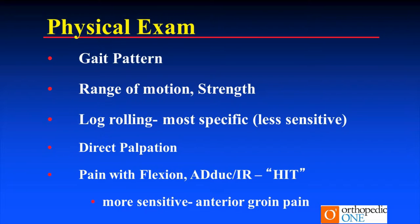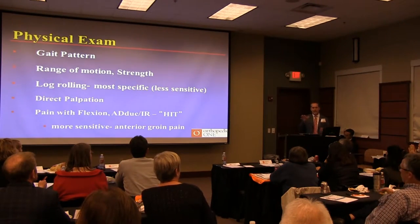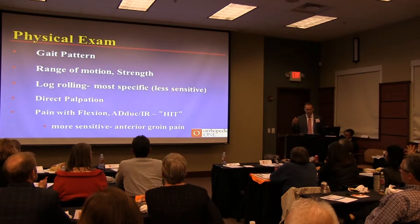Physical exam: what's their gait pattern? Do they have a Trendelenburg gait? A patient this week walked in leaning heavily — I asked her to stand on one leg and she fell down. She had a lumbar issue with weak abductors and a Trendelenburg gait — not a hip problem. You have to sort it out and watch their gait pattern.